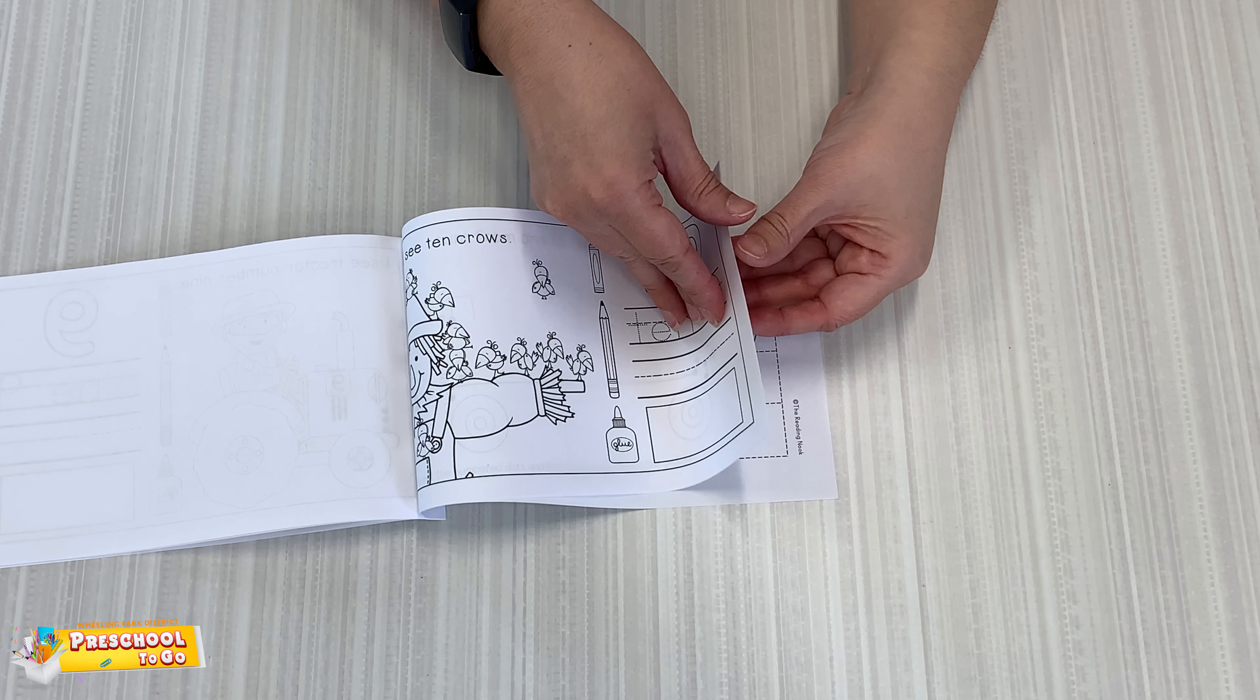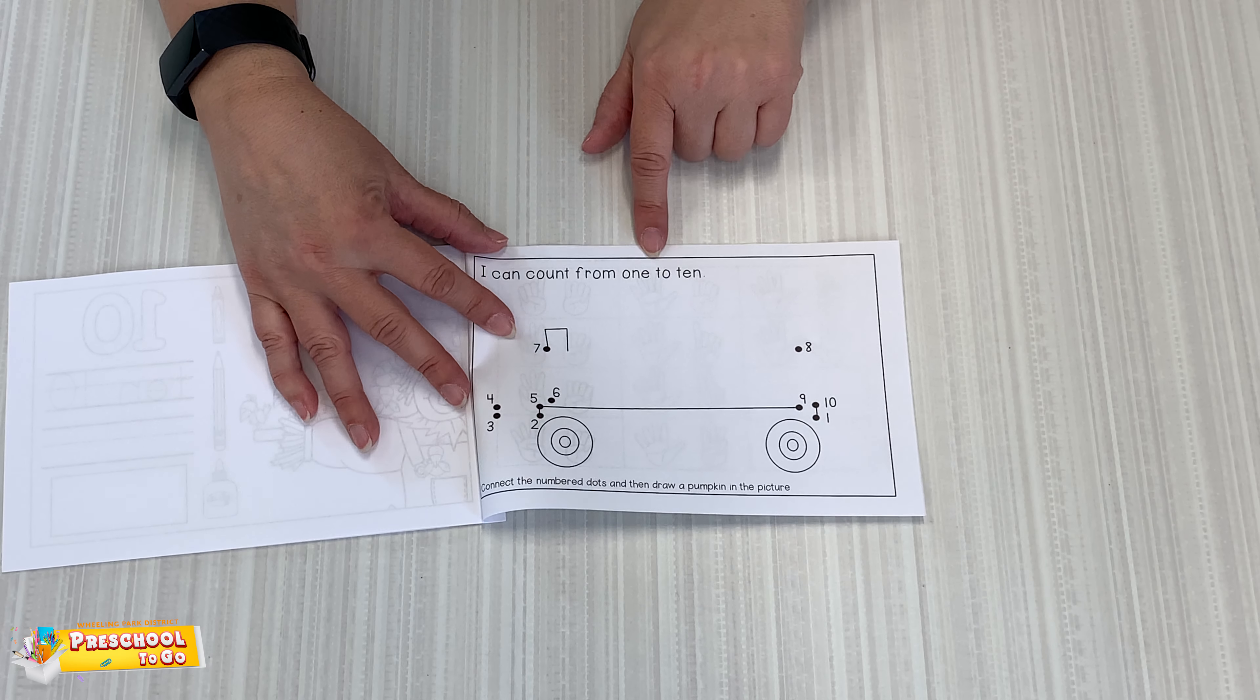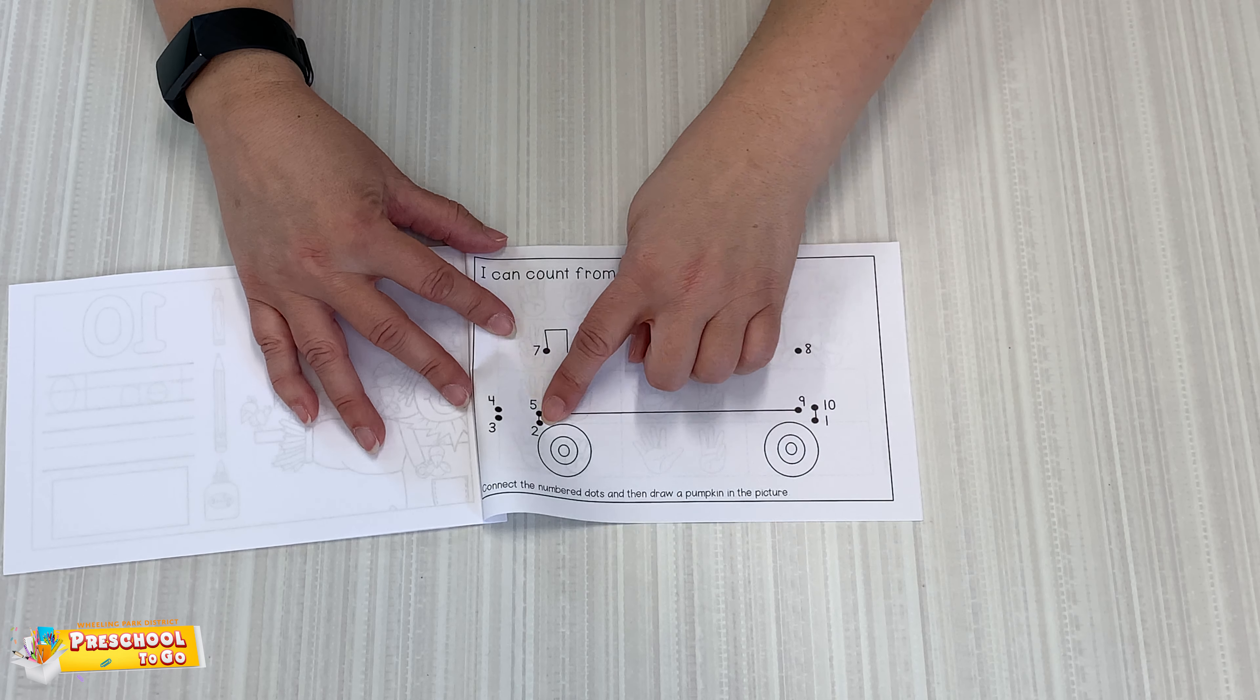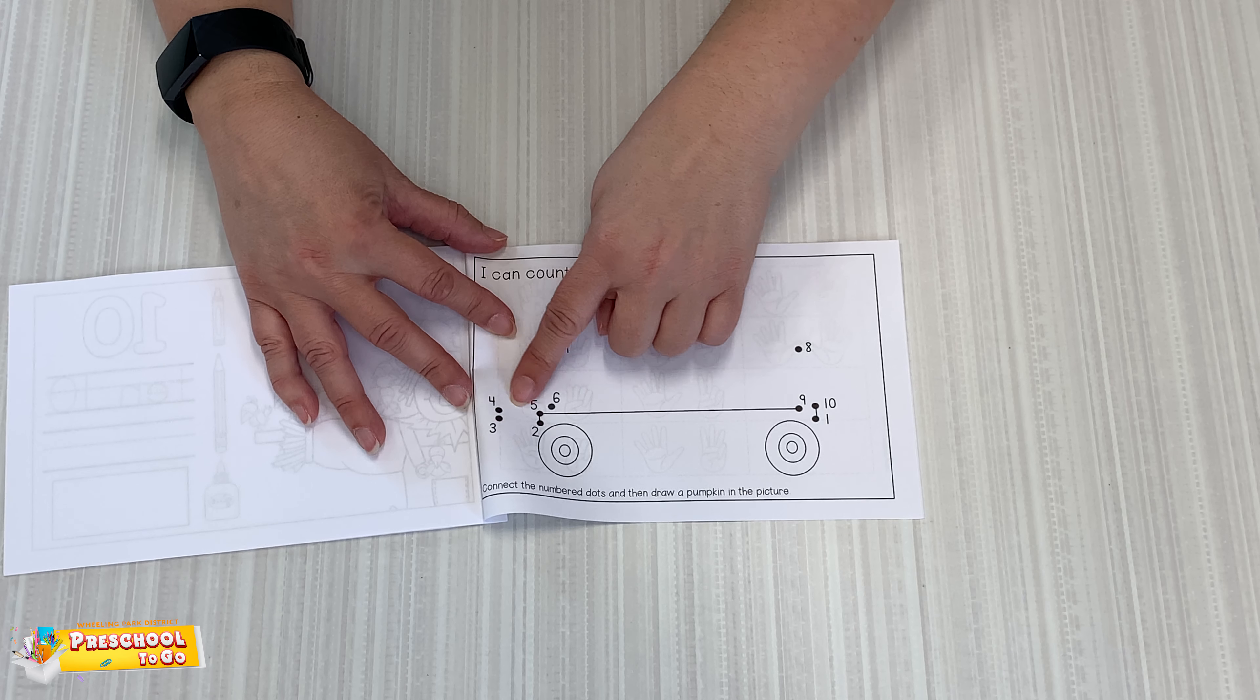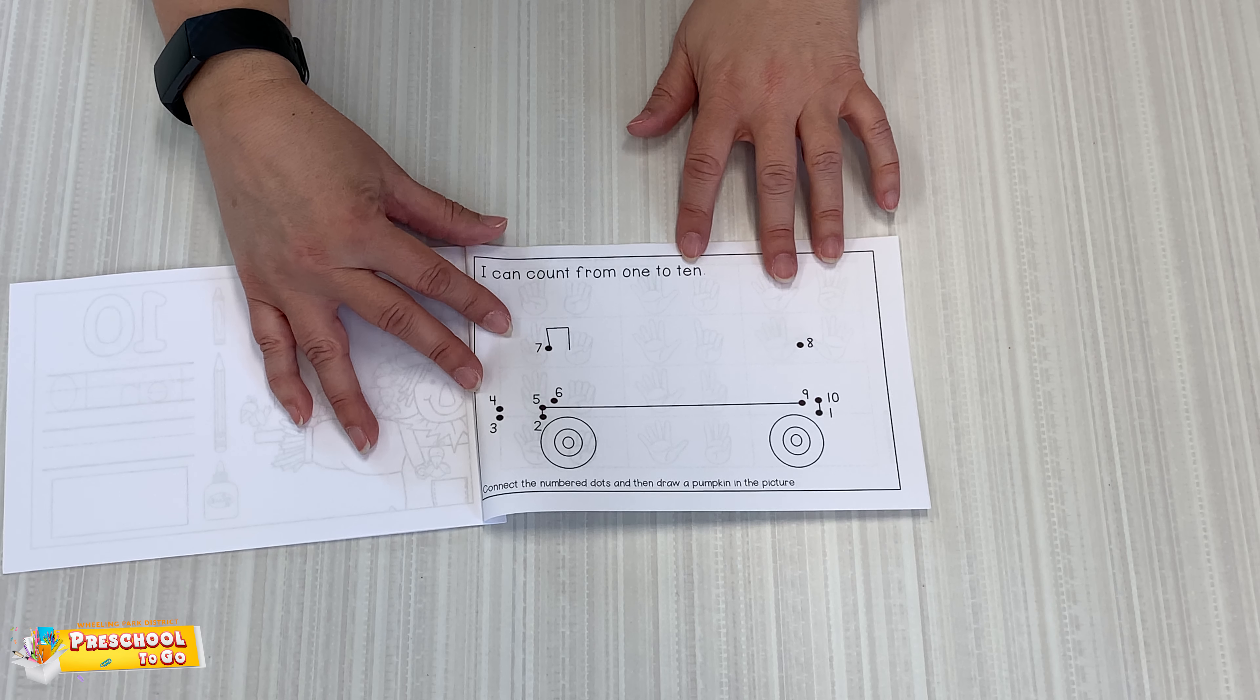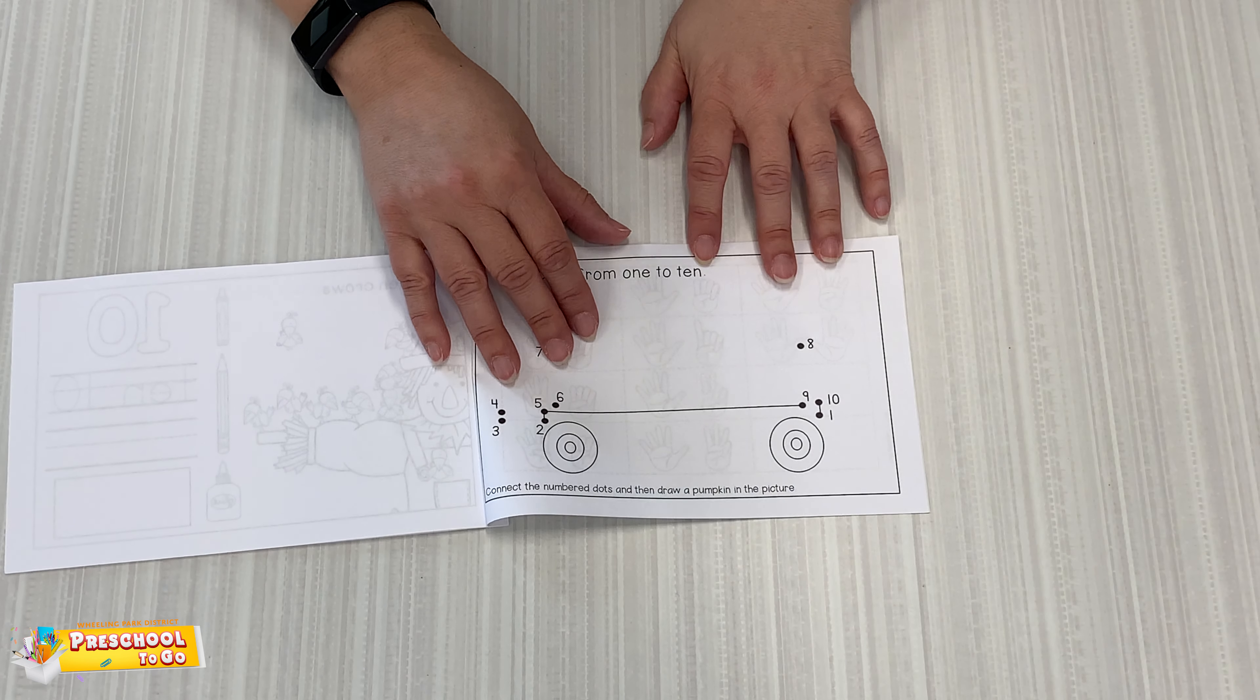And then there's a fun little dot to dot on the last page. It says, I can count from one to ten. So you're going to start here with your pencil. Do one, go to two, three, four, five, six, seven, eight, nine, ten. And then when you're done, you're going to find out what this picture is. It's a surprise right now.